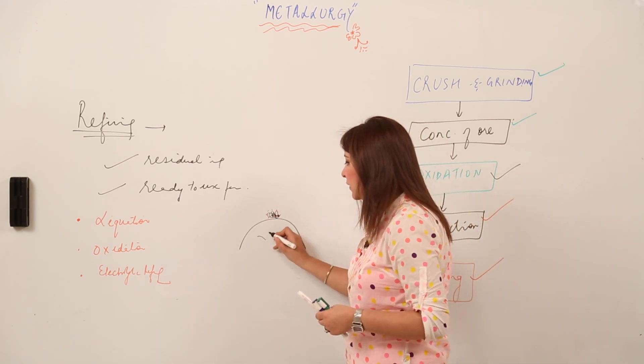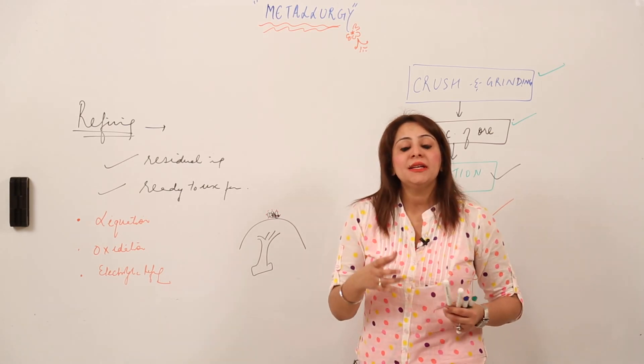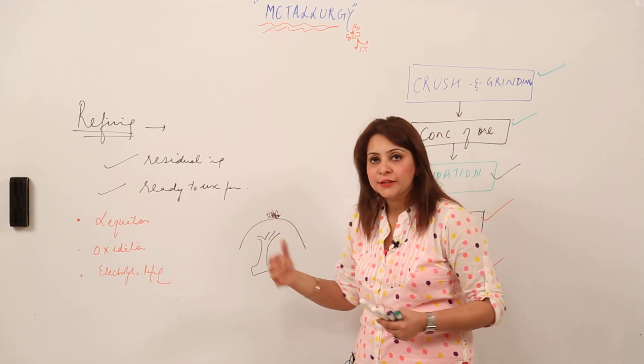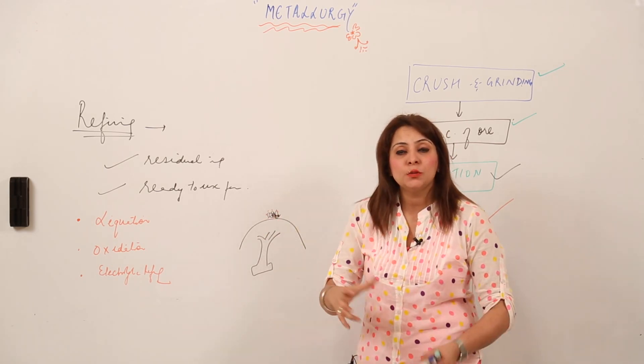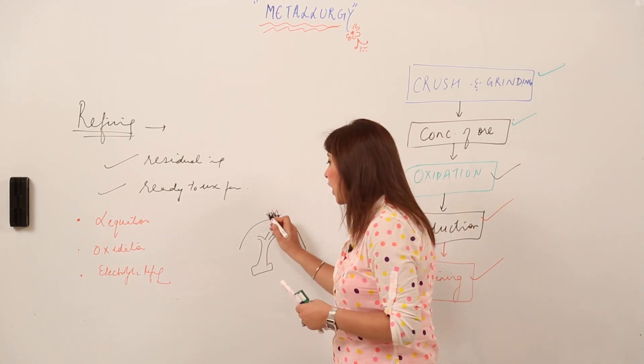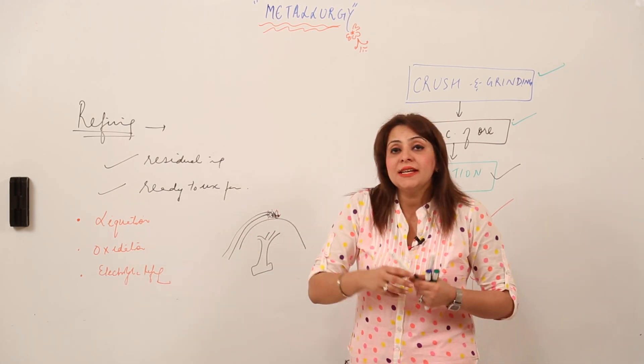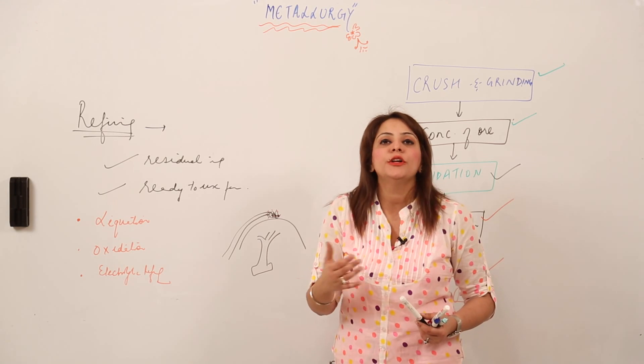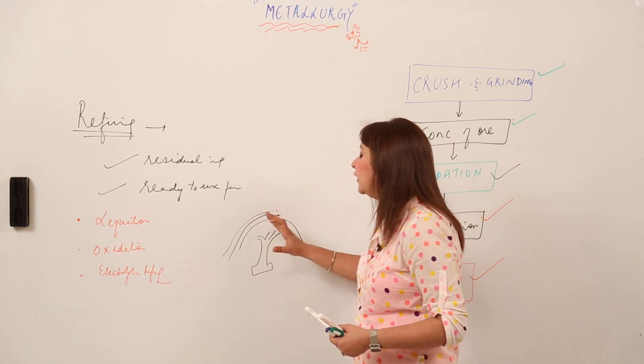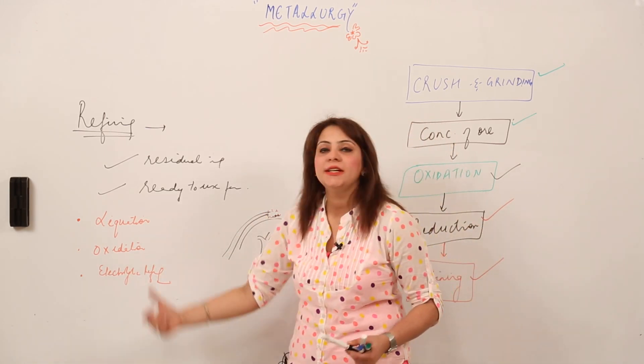We heat it with a burner. Metals have lower melting point compared to impurities. When we apply heat, the metal melts and flows down from the hearth. The impurities have higher melting point, so they don't melt and stay behind. The metal flows and impurities are left behind - this is the liquation method.